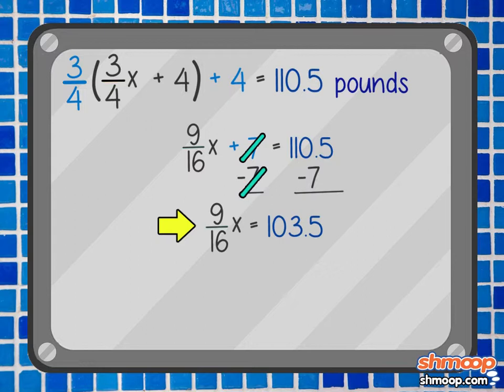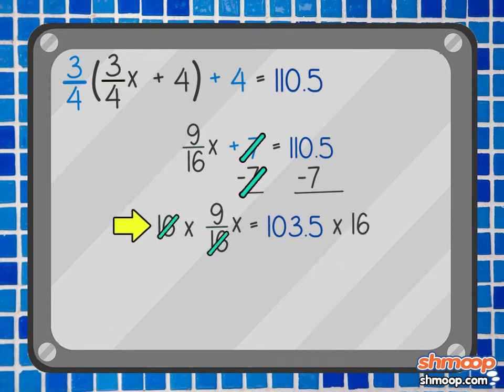We don't know about you, but that fraction is giving us fits. Let's lose it. Multiply both sides of the equation by 16, and we get 9x equals 1656.